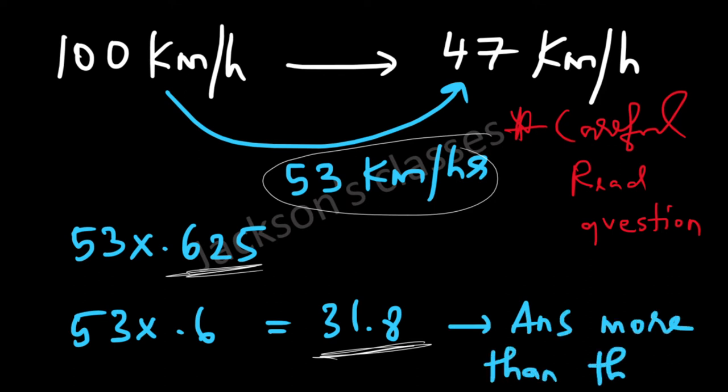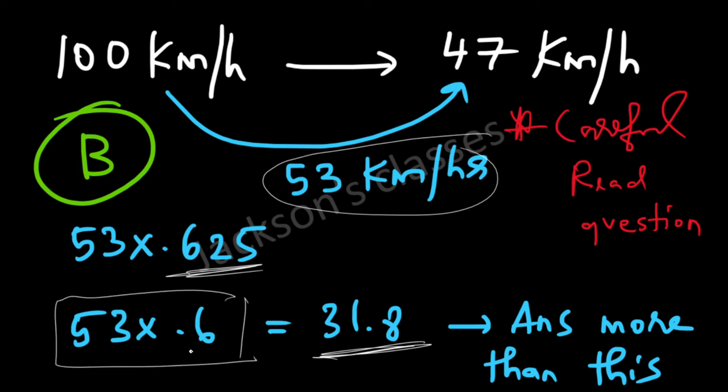So the answer has to be option B, which is 33 miles per hour. Again, remember this calculation, you should be able to do it in your mind.